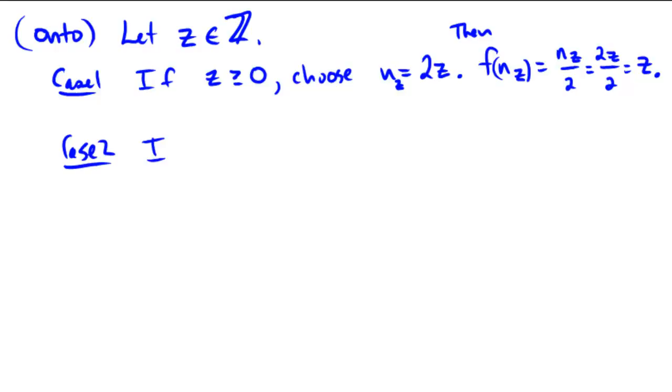Case 2: If z happens to be a negative number, let's choose n_z to be equal to negative 2z minus 1. Notice that this is a definite odd number because I multiplied by negative 2 and then subtracted 1, so that means it would be following the bottom branch rule.